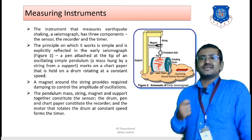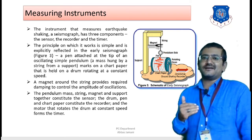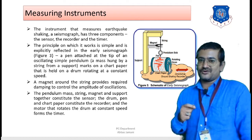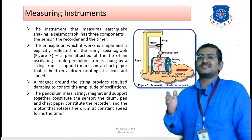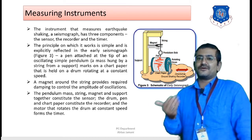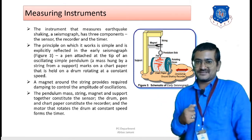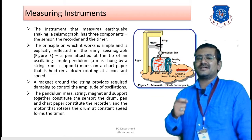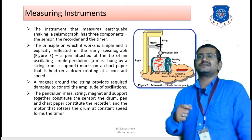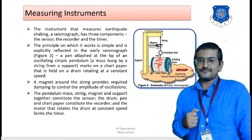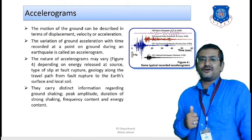The magnet in the seismograph acts as a damper. Without it, the oscillations could go out of proportion and become impossible to record. The magnet dampens the movement of the string and pendulum, keeping oscillations controlled so they can be accurately recorded on the chart paper.